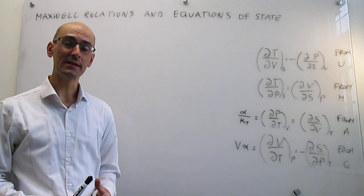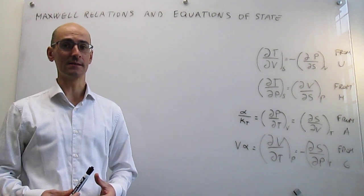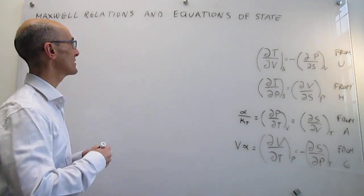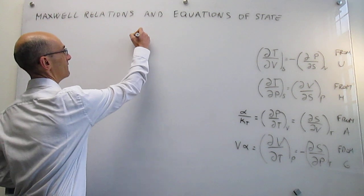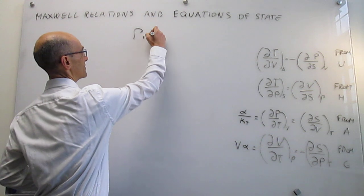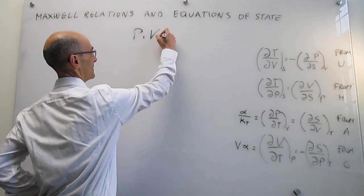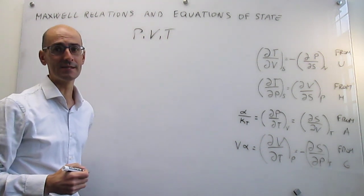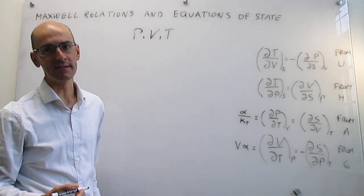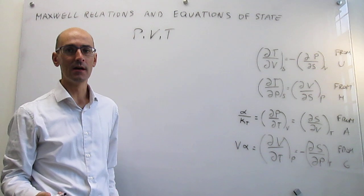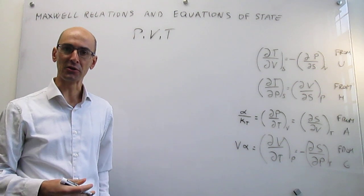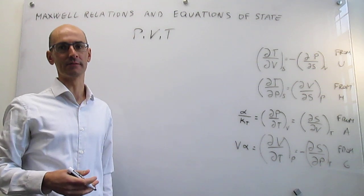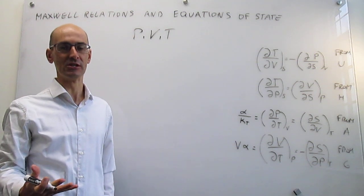An equation of state is simply a relationship between pressure, volume, and temperature, which are the variables that define the state of a system at constant composition — that is, when the composition of the system is not changing.